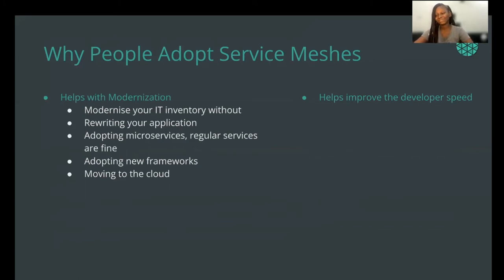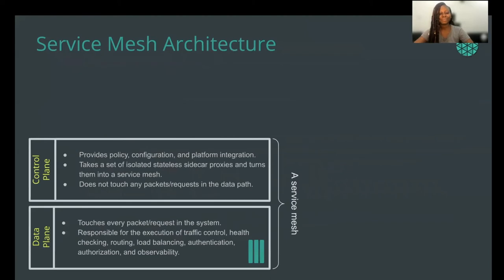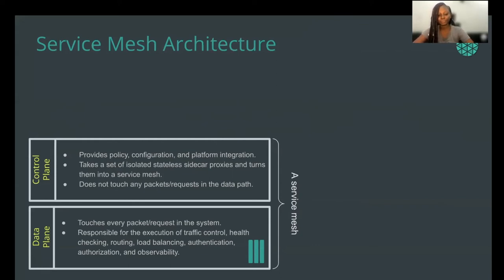Now let's move on to look at the service mesh architecture. The service mesh architecture is divided into three layers. The first is the data plane. This layer is considered the workhorse of the service mesh — this is where all of the service proxies are logically grouped. They are responsible for executing traffic control, health checking, routing, load balancing, auto-scaling, authorization, observability, and so on.